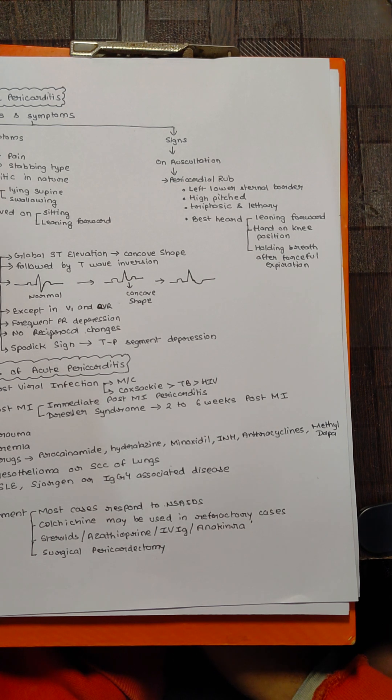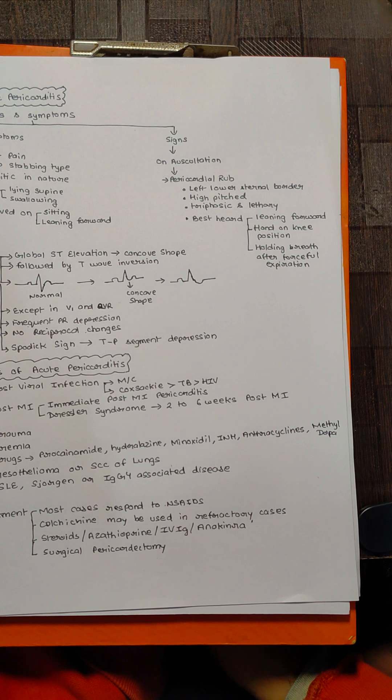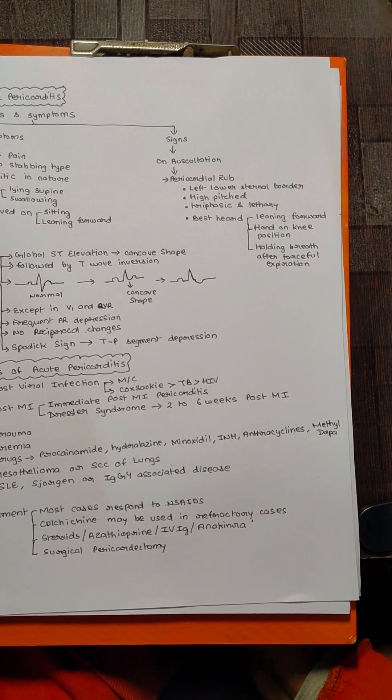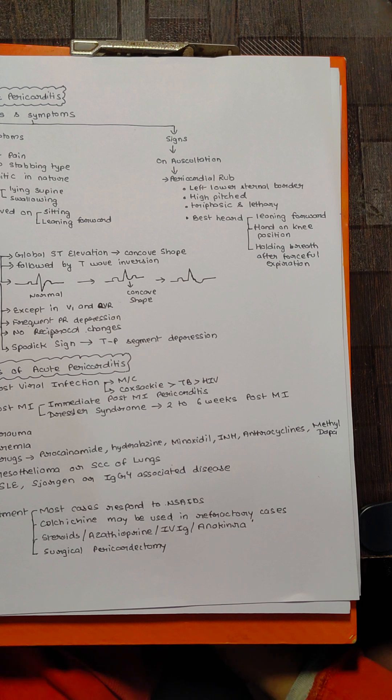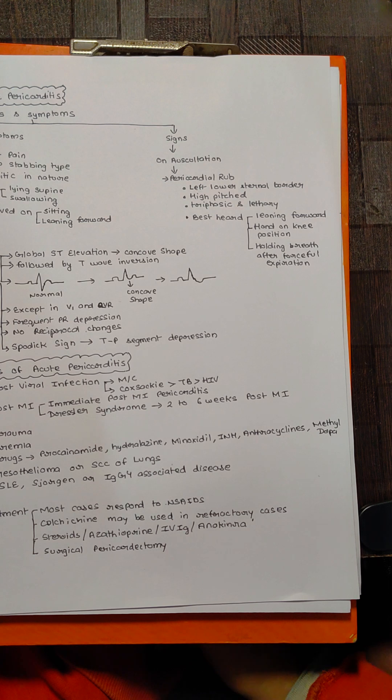This in itself is a paradox because when we read about murmurs, we learn that most of the murmurs increase when the pathology increases. So basically on leaning forward, if the patient is getting relieved in pain, the pericardial rub should decrease, but here instead the pericardial rub increases.